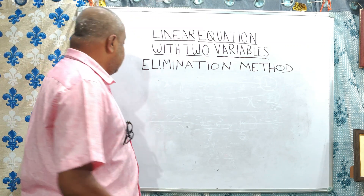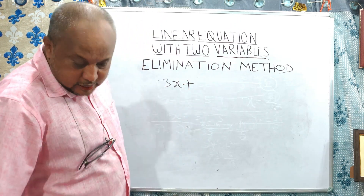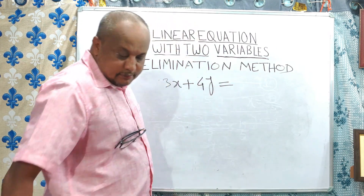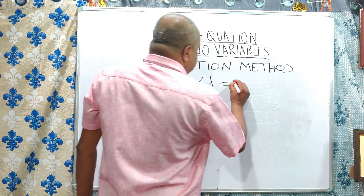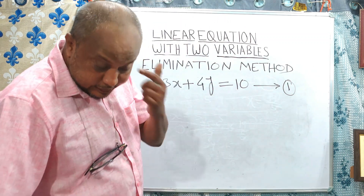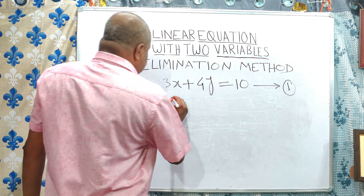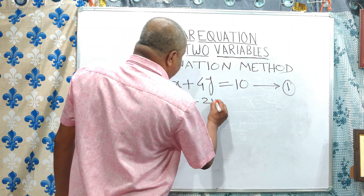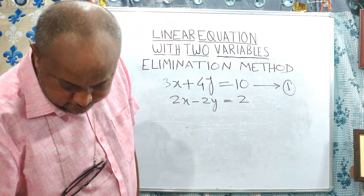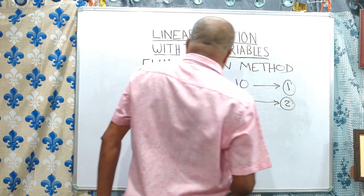Next question. The next question is 3x plus 4y is equal to 10. This is equation number 1. And the second equation is 2x minus 2y is equal to 2. This is equation number 2.